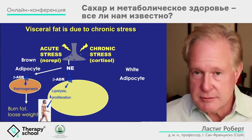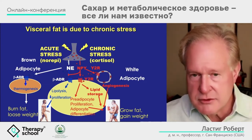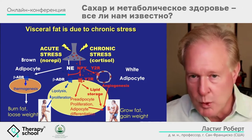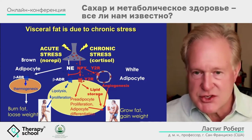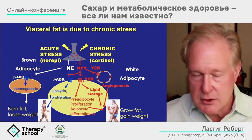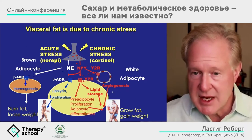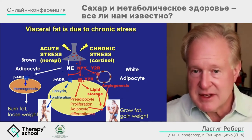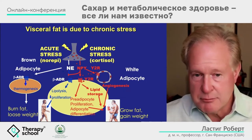However, chronic stress is different — it generates visceral fat rather than losing it. In addition to norepinephrine, those neurons also release neuropeptide Y, which binds to the Y2 receptor on the adipocyte and shuts down lipolysis. This acts as a brake on the adrenergic nervous system, leading to lipid storage and angiogenesis so the fat can grow. In chronic stress, because neuropeptide Y is co-released with norepinephrine, you gain fat instead of burning it.